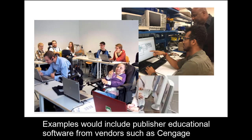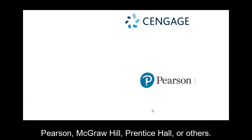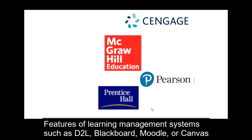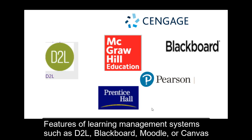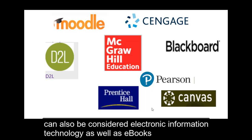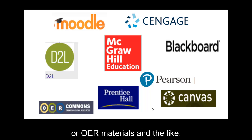Examples would include publisher educational software from vendors such as Cengage, Pearson, McGraw-Hill, Prentice Hall, or others. Features of learning management systems such as D2L, Blackboard, Moodle, or Canvas can also be considered electronic information technology, as well as eBooks or OER materials and the like.